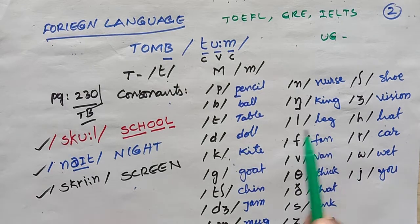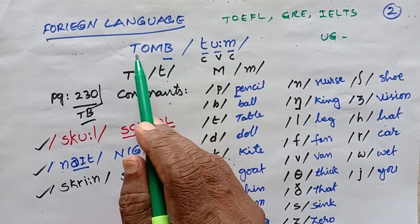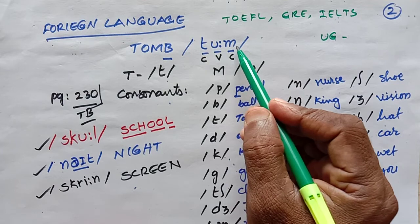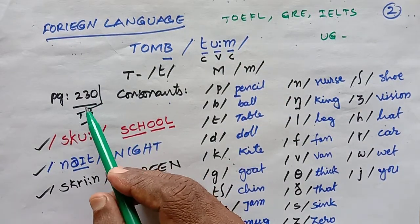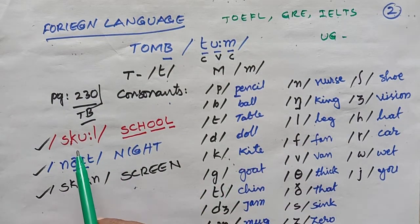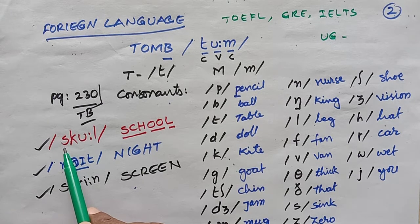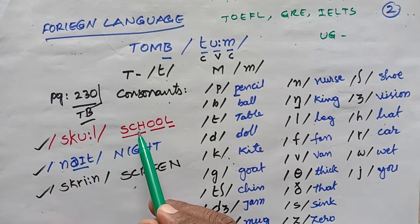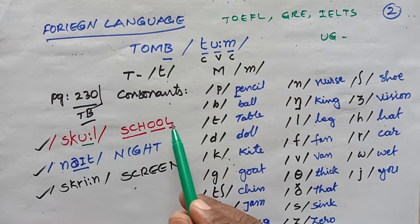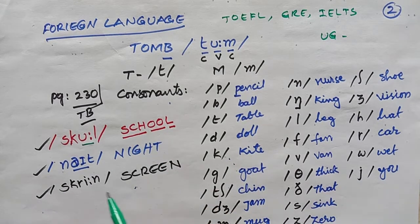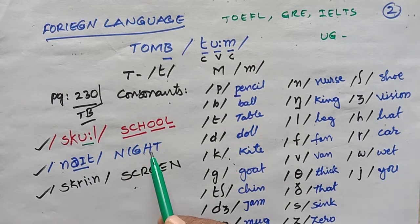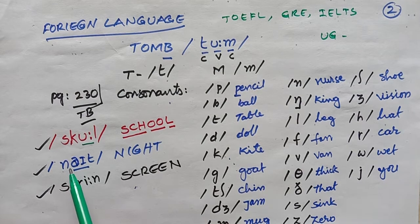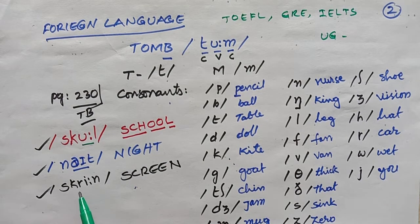Vowels can be divided into pure vowels and diphthong glides. Pure vowels have a single vowel sound, while diphthong glides are combinations of two vowel sounds. Consonants — all 21 of them — can be understood using their phonetic symbols, for example K is represented with a small-letter K, and the letter T is represented with a small symbol T, just like this.